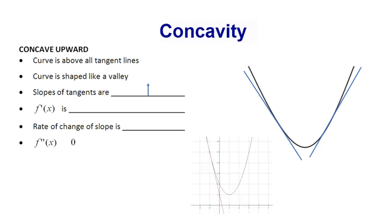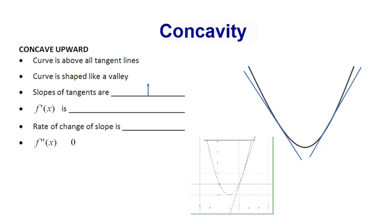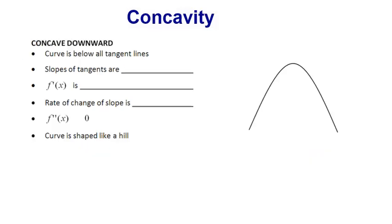I'm going to show you what increasing slopes means via a parabola graph. Watch what happens when I animate the tangent line as it moves along the curve — it does a rotation. That rotation is counterclockwise as it moves from left to right. Anytime the tangent line is rotating counterclockwise, the slopes are increasing, which means the first derivative is also increasing. The rate of change of the slope — that's the second derivative — is therefore positive.